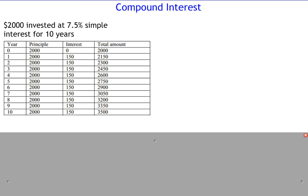In this video we look at compound interest. On the left here we can see a table that shows the growth of two thousand dollars at seven and a half percent using simple interest. With simple interest you get interest only on the principal — the amount that you invested. Here we invest two thousand dollars, and after the first year we're always going to have two thousand dollars as a principal, and after the first year we get a hundred and fifty dollars interest — that's seven and a half percent of two thousand.